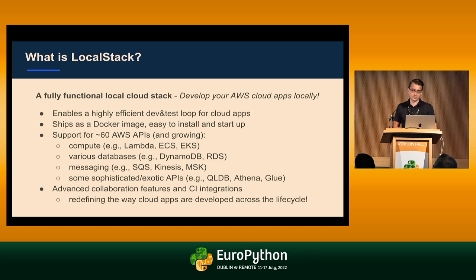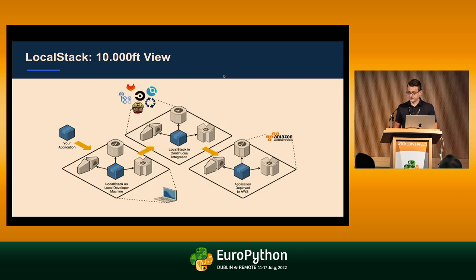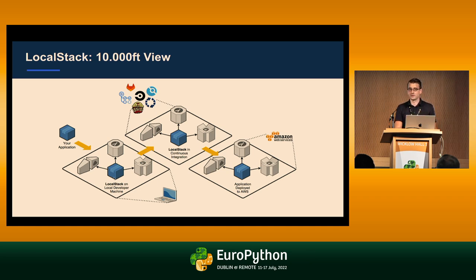LocalStack ships as a Docker image, is reasonably easy to install, and has support for around 50 to 60 AWS APIs right now — different compute services, various databases, messaging, and some more sophisticated exotic APIs. The 10,000-foot view of what we want to achieve is that your application is just talking to these API endpoints, not really knowing it's talking to emulated endpoints in the local context and in the CI system before actually moving to production.